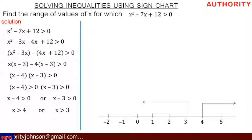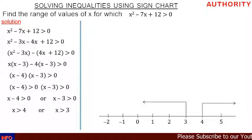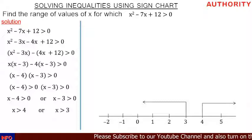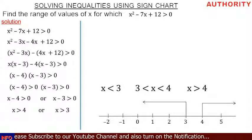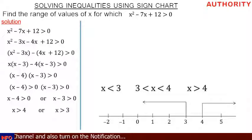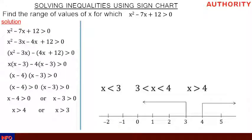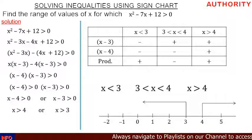On this number line we can see three ranges of values: all numbers less than 3, all numbers between 3 and 4, and all numbers greater than 4. In inequality statements: x is less than 3; x is greater than 3 but less than 4; and x is greater than 4.